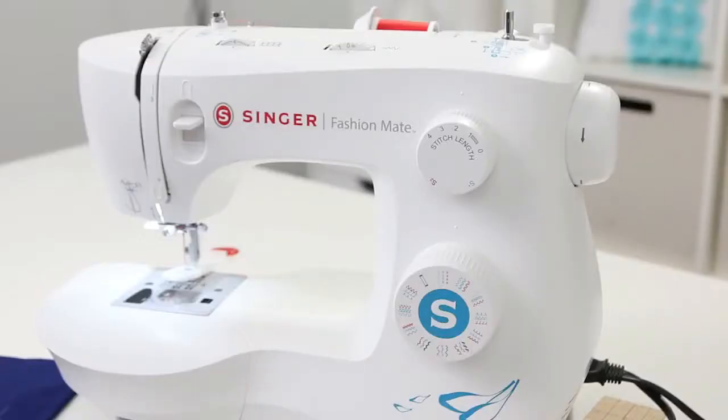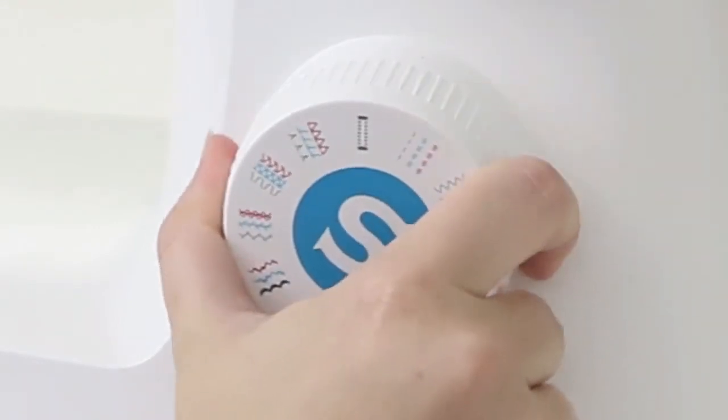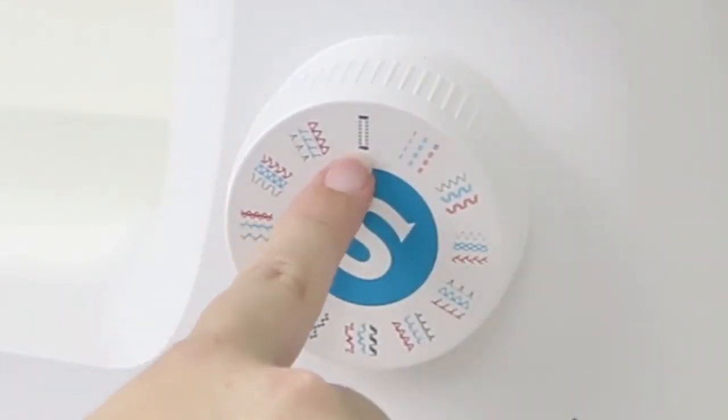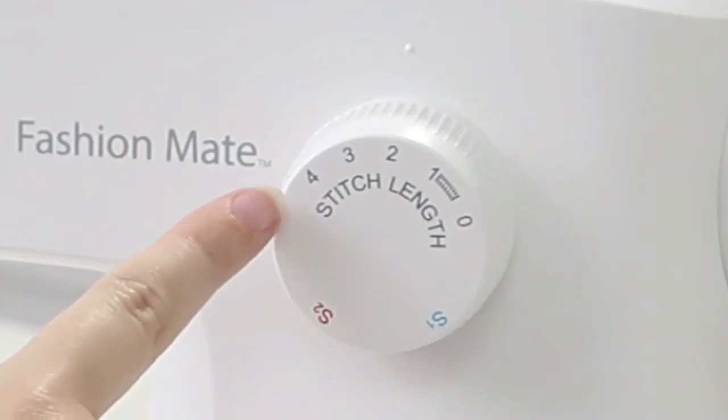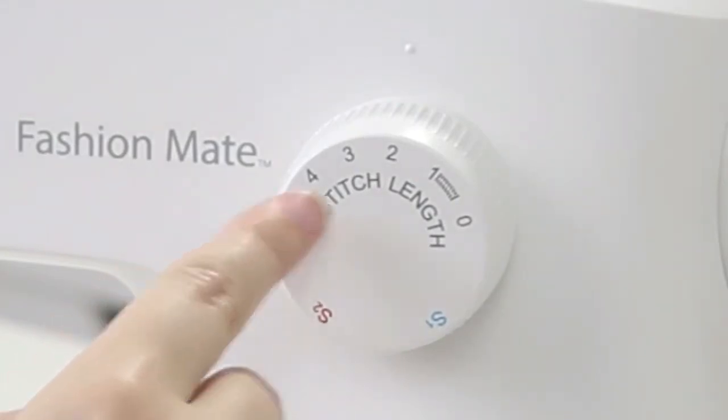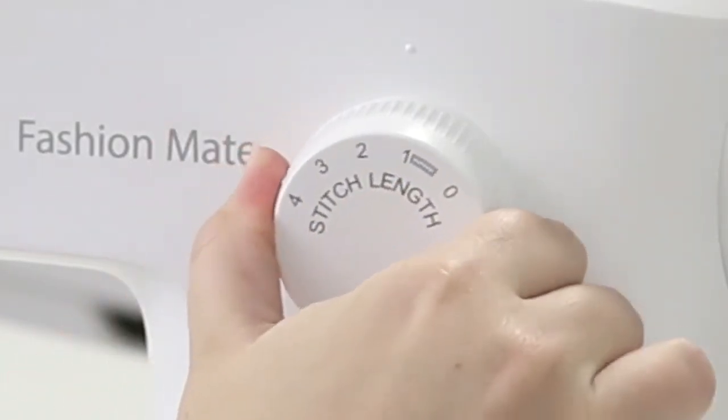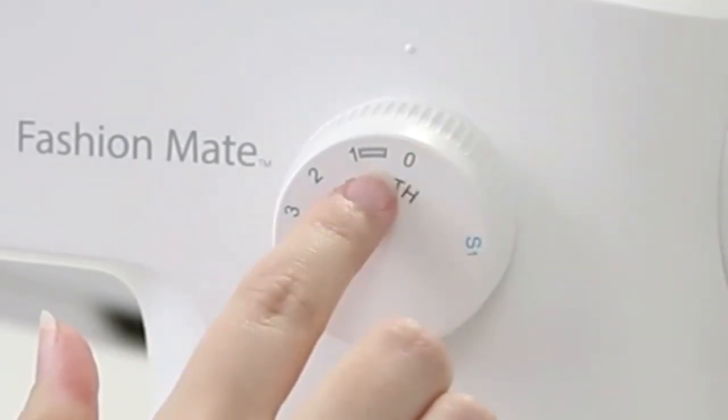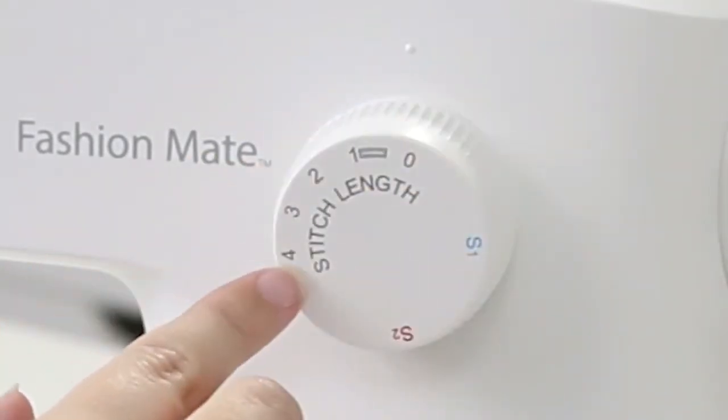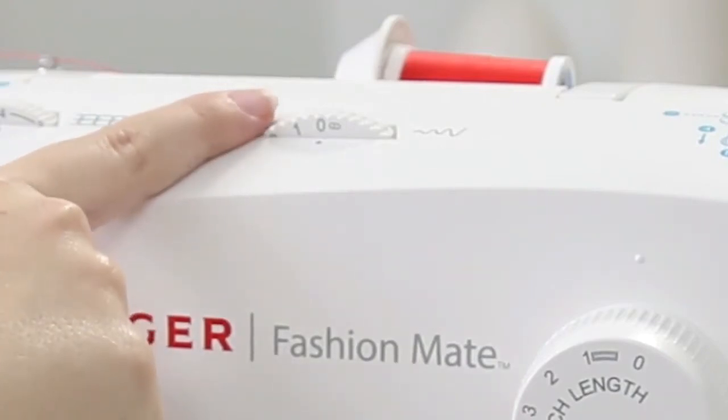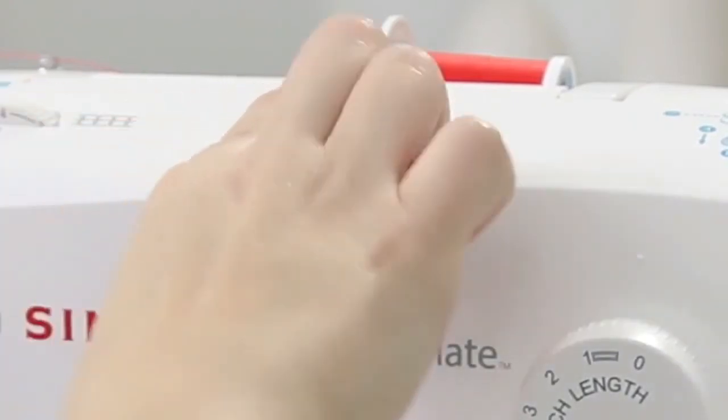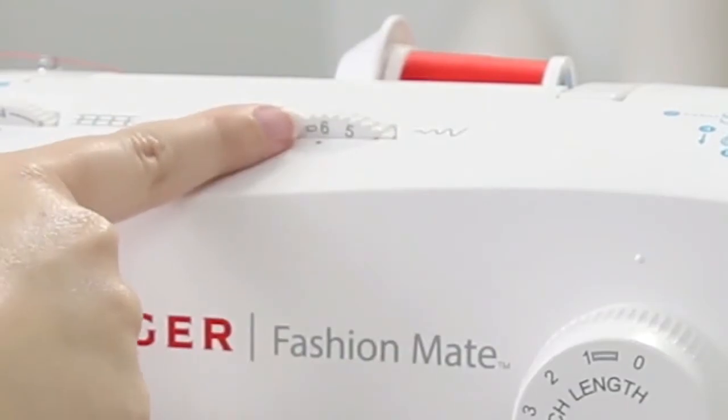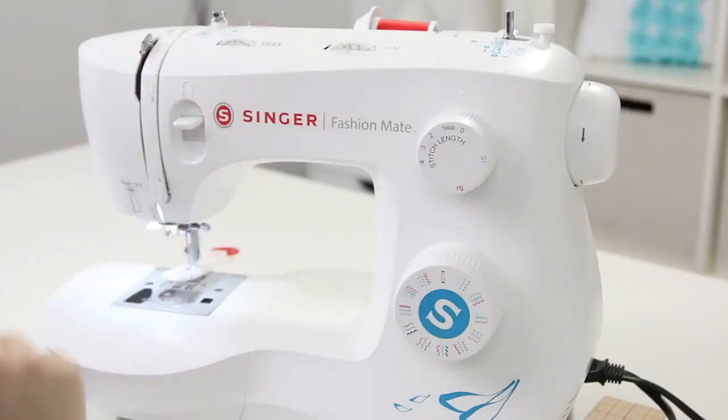To select the buttonhole, go to your stitch selector dial and move it to the icon that looks like a little buttonhole. Go up to your stitch length dial and move it to this little buttonhole icon so it will stitch out my buttonhole. Then come up to the stitch width dial and move it to the number 6. Now we have one last thing to do before we actually start stitching.